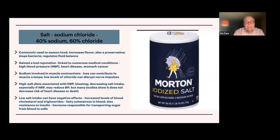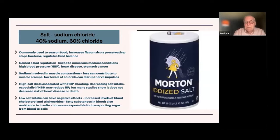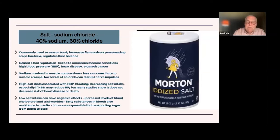Salt is linked to things like high blood pressure, aspects of heart disease, and possibly some association with certain stomach cancers. Sodium is involved in muscle contractions, and its loss can contribute to muscle cramps, while low levels of chloride can disrupt nerve impulses. High salt diets are associated with high blood pressure and bloating. If you have decreased salt intake, especially with high blood pressure, it can reduce your blood pressure — but many studies show it does not decrease the risk of heart disease or death.